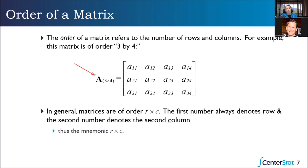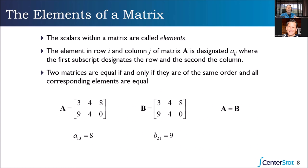In matrix A, we have a bold capital letter so we know it's a matrix, and the order is three by four — three rows and four columns. That's a three by four matrix. You always do row first, column second. So A is a three by four rectangular matrix.